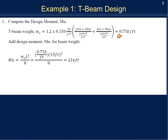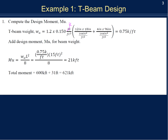Now we take that distributed load and turn it into a moment. Since it's a constant distributed load across the 15-foot span, we have 0.75 kips per linear foot times 15 feet squared divided by 8, giving us an additional moment of 21 kip-feet. Adding that to the already known factored load of 600 kip-feet gives us a total of 621 kip-feet of moment.